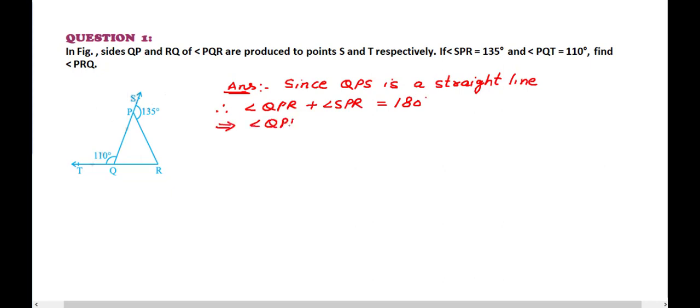This implies angle QPR plus 135 degrees is equal to 180 degrees. From here we can conclude angle QPR is equal to 180 degrees minus 135 degrees.